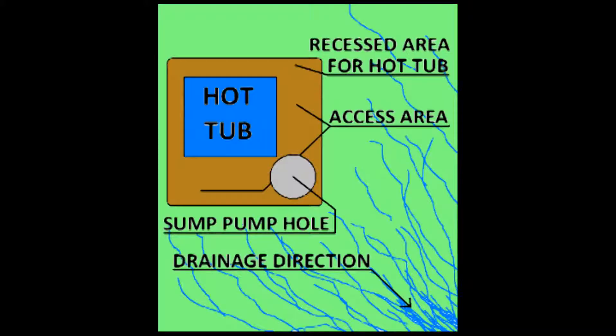First, locate the corner of where the spa is going to be located that is closest to the lowest drainage area. Next, dig a hole that is round, 24 inches in diameter, and 30 inches deeper than the bottom of your hot tub.